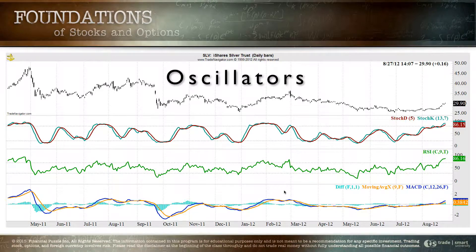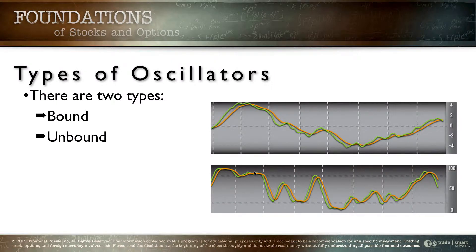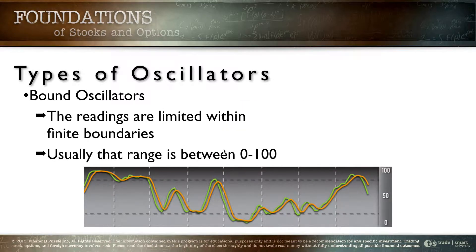There are two types of oscillators we'll be looking at: range-bound and unbound. For a bound oscillator, the readings are confined within a finite boundary — typically between zero and one hundred. You can drop as low as zero and hit a maximum of 100, but you can't go above 100 or below zero. Those are the hard boundaries.